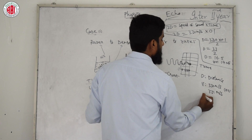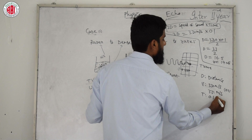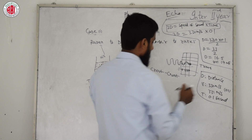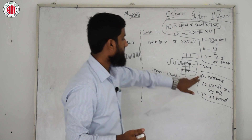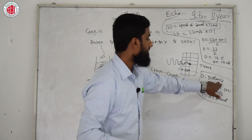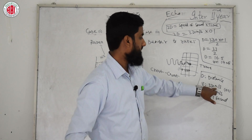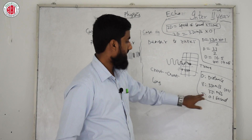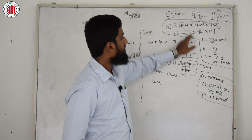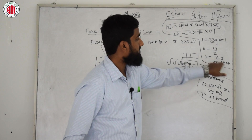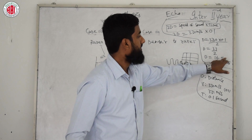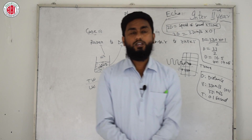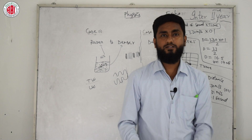Describe the variables: d is distance, v (velocity) is 330 m/s or 331 m/s, and t (time) is 0.1 seconds. When you calculate, d comes out to 16.5 meters, or you can consider 17 meters. That is everything about echo.